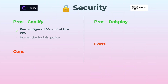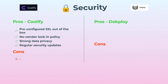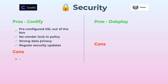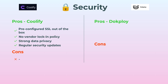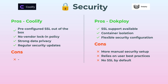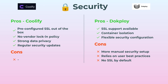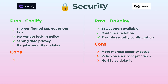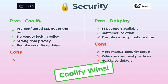Security! Coolify really flexes here — SSL out of the box, strong privacy, and regular updates. There's no vendor lock-in either, which is actually rare and super nice. DocPloy does support SSL, container isolation, and flexible security configs, but it's a bit more do-it-yourself with manual setup. You've got to follow best practices, and SSL isn't done by default, which is kind of a pain. Coolify is definitely more reassuring here.